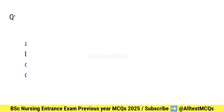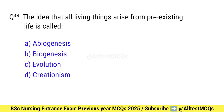Question number 44. The idea that all living things arise from pre-existing life is called what? Right option is B: Biogenesis.